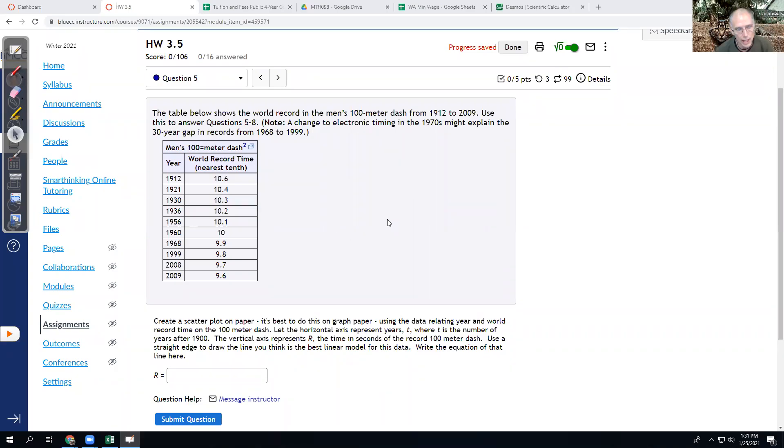All right, so let's look again at homework 3.5 number five. So we have some world records here for the men's 100 meter dash and we have some of the Olympics from 1912 to 2009 in here. And again, it says here there was a change in the electronic timing in 1970s and then that might explain the gap. So we're missing some records.